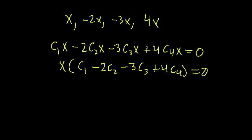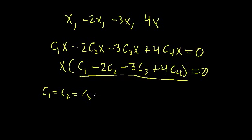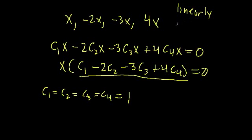We said it has to hold for all values of x, so we need constants that make the expression in parentheses equal to 0. That's fairly easy — even when all constants equal 1, we get 1 minus 2 minus 3 plus 4, which cancels out. We found a non-trivial set of constants that make this equation hold, which means this set of functions is linearly dependent.